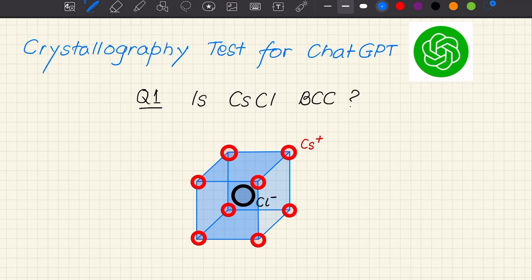In this series of videos I am going to subject ChatGPT to some simple crystallographic tests. So I start with one very simple question which creates a lot of confusion among students: is cesium chloride body centered cubic, BCC?